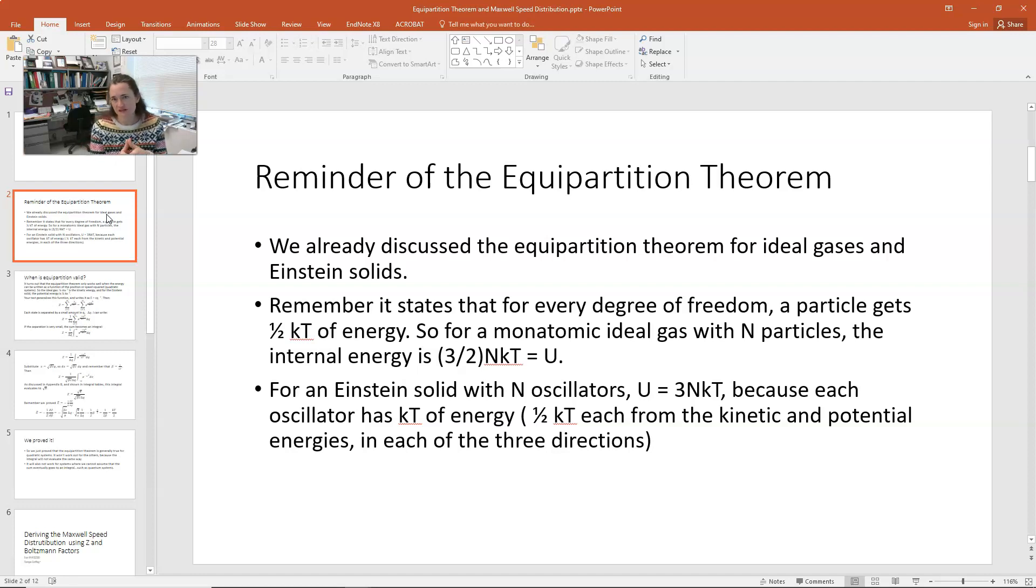So that means that, for example, for an ideal gas, a monatomic ideal gas in three dimensions, each one of the three dimensions of motion gives you kt over 2, so that a single gas particle would have 3 halves kt of energy, and a collection would then have an internal energy of 3 halves n kt.